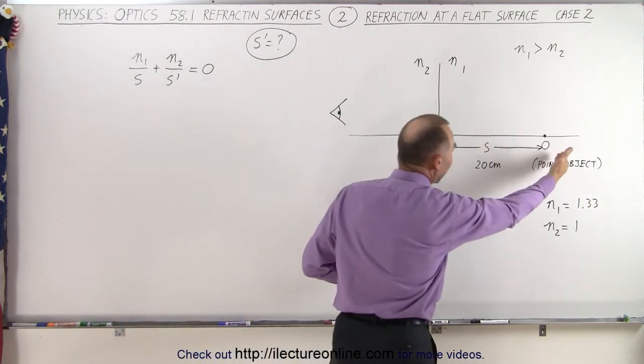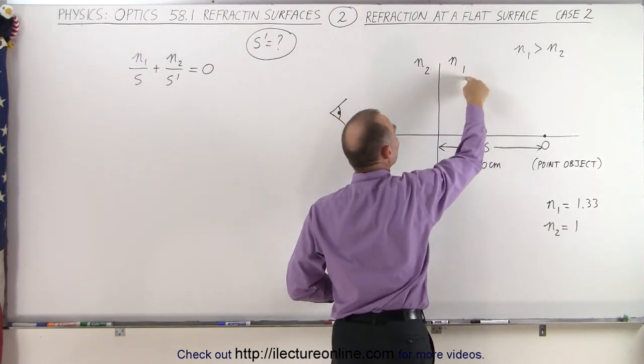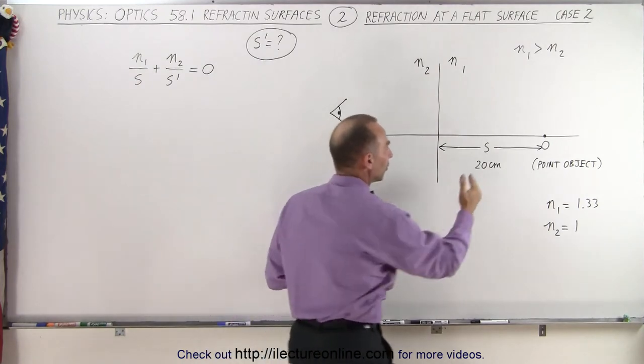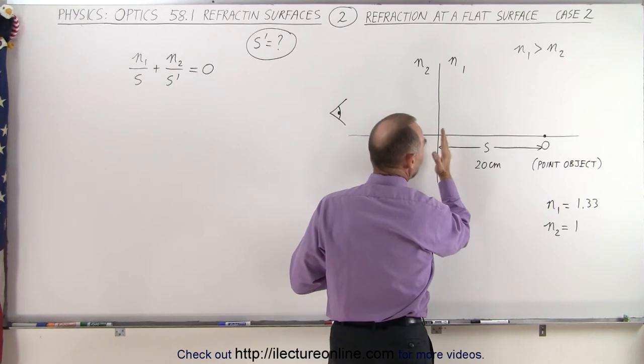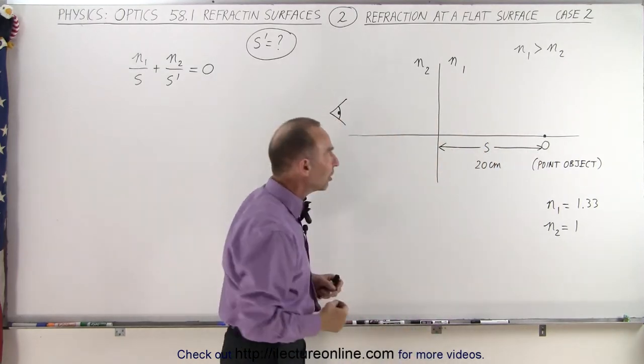We now place the object on the right side, and notice that we place N1 on the same side as the object. The distance from the object distance, S, is the distance from the boundary to where the object is at. In this case, again, it's a point object.